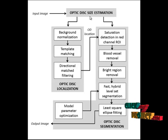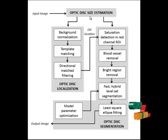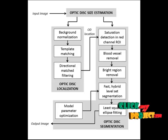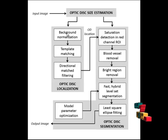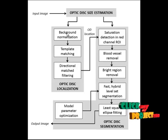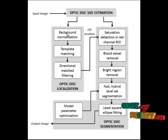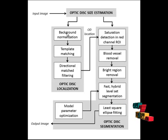In the next step, we estimate the OD localization. In OD localization, we first estimate the background to reduce false detection of OD candidates. We apply an over-smooth background image generated by average filtering using a square window three times the size of the estimated OD radius. The size of the filter chosen is larger than the OD in order to capture the slow varying background.